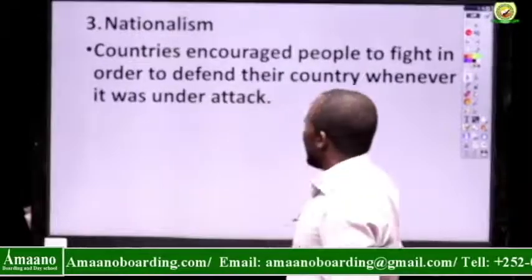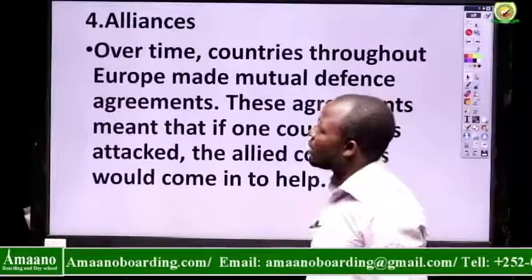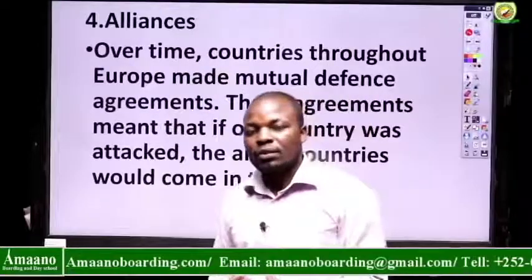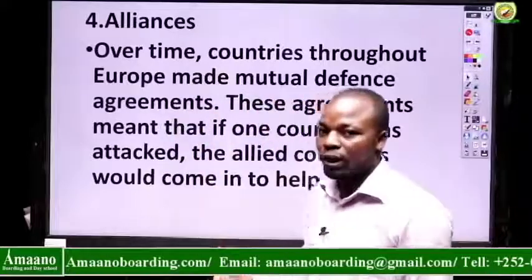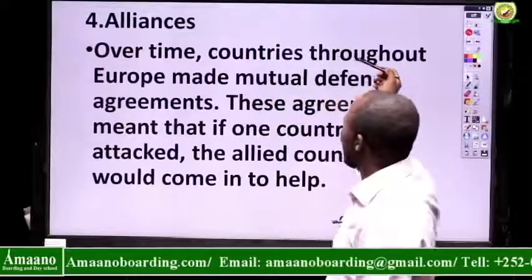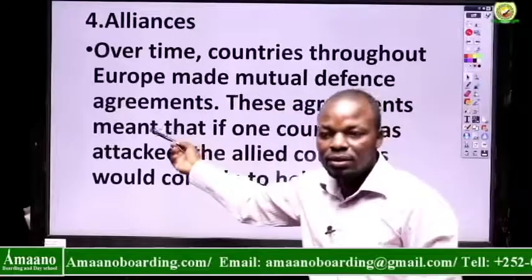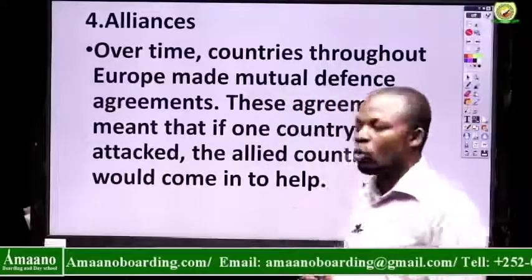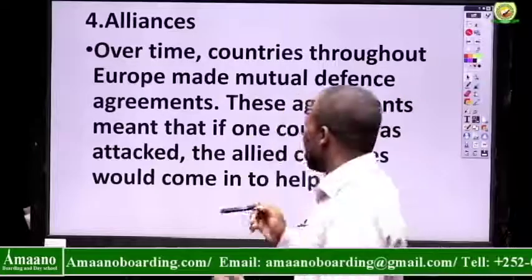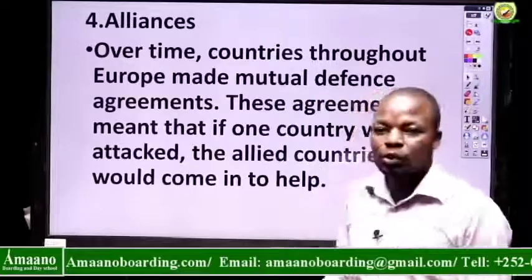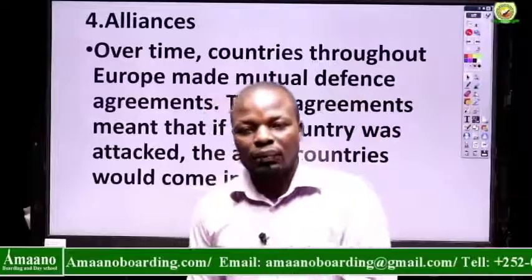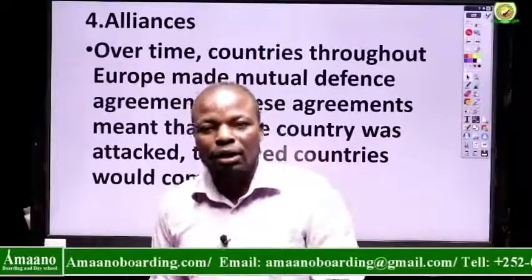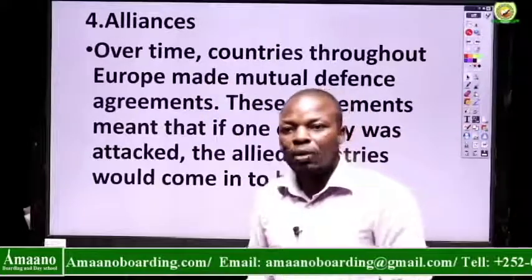The last cause of the First World War is alliances. An alliance is like a coalition — coming together with many other friends to form one large group. Over time, countries throughout Europe made mutual defense agreements. These agreements meant that if one country was attacked, all allied countries would come in to help. For example, when Austria declared war on Serbia, the countries allied to Austria had to come in and help Austria fight Serbia.